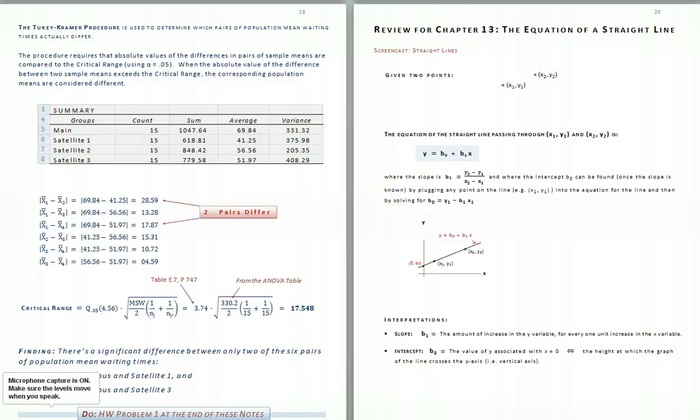Thus, if we're only willing to take a 5% chance of being incorrect, we can only conclude that these two pairs of population mean waiting times are different.